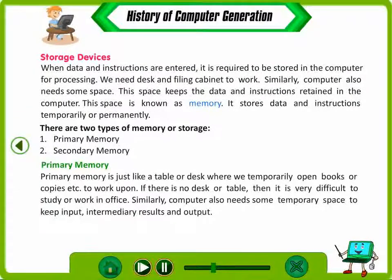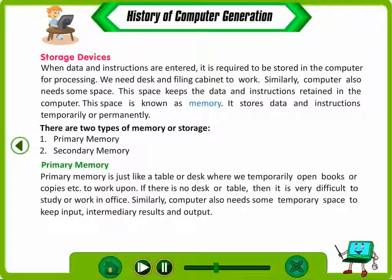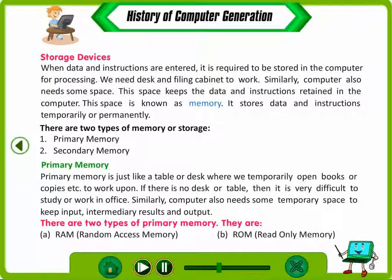Primary memory is like a table or desk where we temporarily open books or copies to work upon. Similarly, a computer needs some temporary space to keep input, intermediary results, and output. There are two types of primary memory: RAM (Random Access Memory) and ROM (Read-Only Memory).